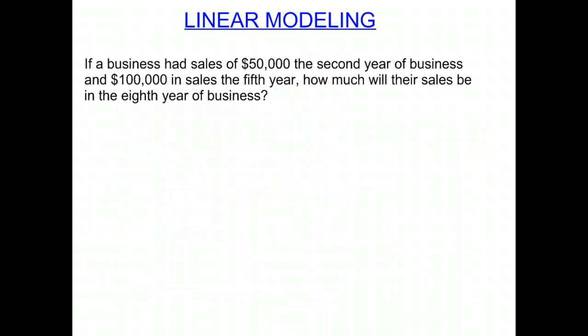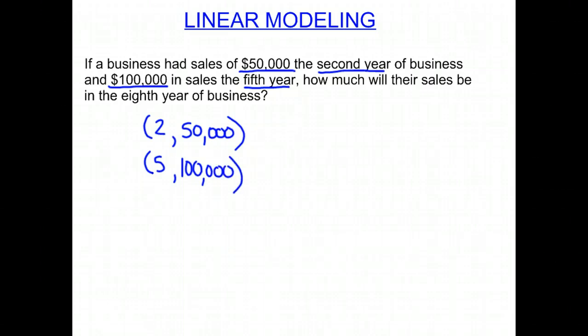If a business had sales of $50,000 the second year of business, and $100,000 in sales the fifth year, how much will their sales be in the eighth year of business? So again, we're going to look at those points. So they had a sale of $50,000 in the second year. So remember, the sales depends on the year. So we have second year was $50,000. And $100,000 in the fifth year. So five years, they do $100,000. How much will their sales be in the eighth year of business? So in eight years, how much will they make?